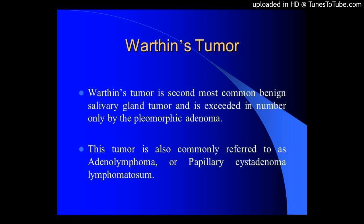Warthin's Tumor: Cytohistological Spectrum with Emphasis on Diagnostic Difficulties, by Neelam Sood and Parismrita Borah, via Diagnostic Cytopathology. Warthin's tumor is characterized by the presence of epithelial proliferation in a lymphoid stroma. It has been categorized as Seifert's types 1–4, depending on the proportions of the two components.